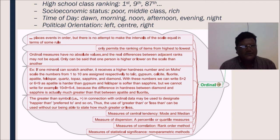Now, in nutshell, places events in order, but there is no attempt to make the intervals of the scale equal in terms of some rule. Only permits the ranking of items from highest to lowest. Ordinal measures have no absolute values and the real differences between adjacent ranks may not be equal. Only can be said that one person is higher or lower on the scale than another.